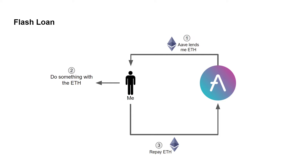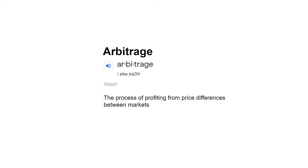But why would someone want to use a flash loan? What are they going to do with the borrowed asset in that second step? There are a few things you can do with a flash loan, and I'll cover three of them. The first is to participate in arbitrage — the process of profiting from price differences between markets. Let me go through an example to explain how this works.